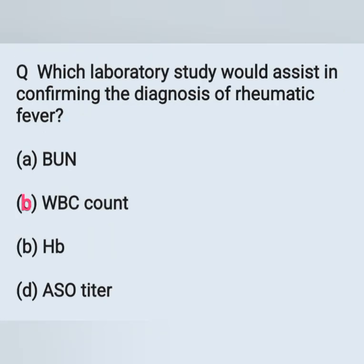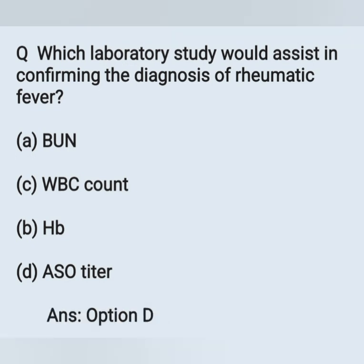Which laboratory study would assist in confirming the diagnosis of rheumatic fever? Option A: BUN (blood urea nitrogen). Option B: WBC count. Option C: Hb. Option D: ASO titer. ASO means anti-streptolysin O titer. The correct answer is Option D, ASO titer. An elevated ASO titer can confirm the diagnosis of rheumatic fever.